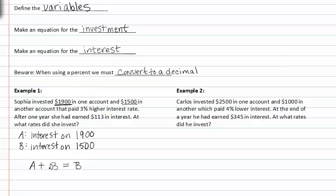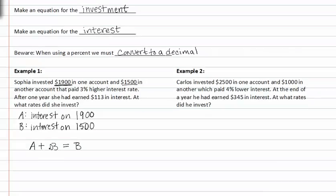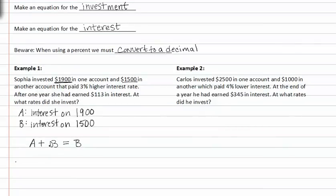Because A represents the interest, we can write B in terms of A. At this point we know that there was a certain amount times a certain rate A, plus a certain amount invested at a certain rate B. And we know that all together, Sophia made $113 in interest.